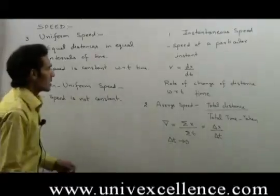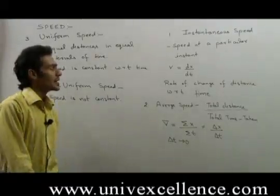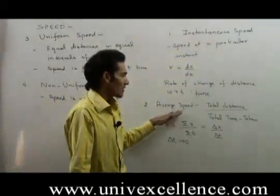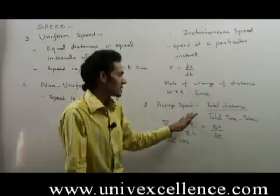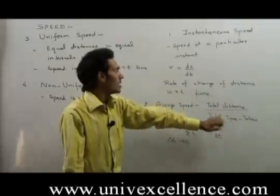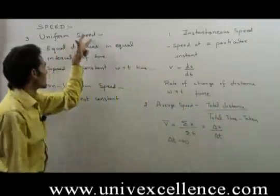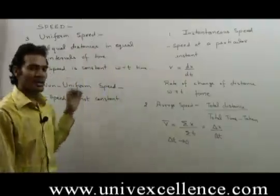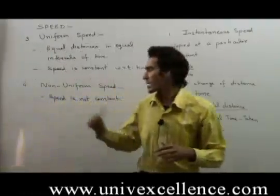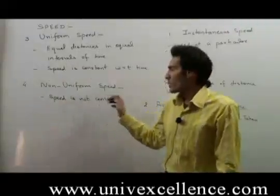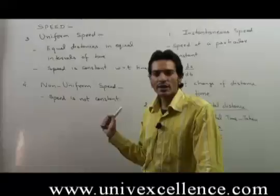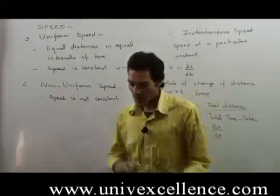Here we have four types of speed. First, instantaneous speed — speed at a particular instant. Second, average speed, which is defined as total distance upon total time taken. Third, uniform speed — if speed is constant with respect to time, then it is uniform speed. And fourth, non-uniform speed — when speed is not constant, it is known as non-uniform speed.